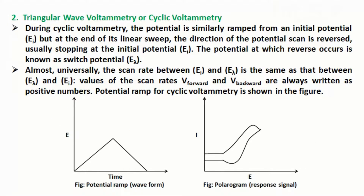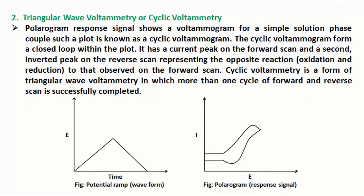Triangular wave voltammetry, or cyclic voltammetry: during cyclic voltammetry, the potential is similarly ramped from an initial potential EI, but at the end of its linear sweep, the direction of the potential scan is reversed, usually stopping at the initial potential EI. The potential at which reversal occurs is known as the switch potential ES. Almost universally, the scan rate between initial potential EI and switch potential ES is the same in both directions. The potential ramp for cyclic voltammetry is shown in the figure. The voltammogram for a simple solution-phase couple is known as a cyclic voltammogram.